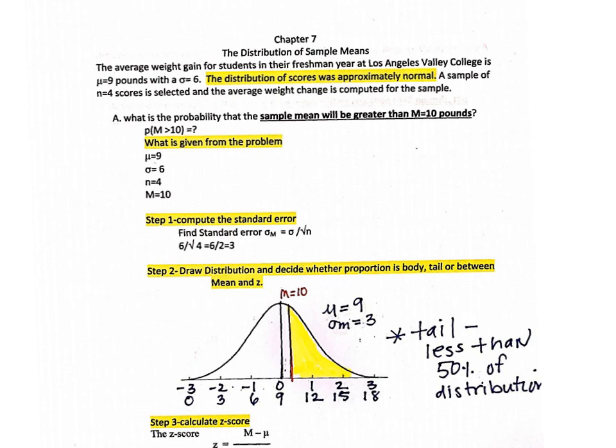We've taken a survey of the average weight gain for students in their freshman year at Los Angeles Valley College. The population mean is 9 pounds with a standard deviation of 6, for our 14,000 students currently attending. The distribution of scores is approximately normal — it's important to recognize this, because without that information you would not be able to do a z-score test.